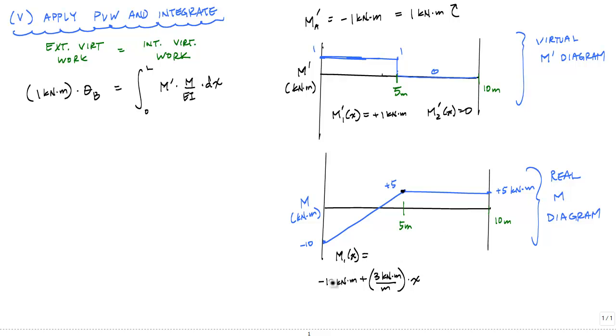If you didn't capture that, the best way to do it is to make a cut in the cantilever and draw the moment function. But if you need practice with that, you really need to review statics and mechanics. And here, M₂(x) is a constant moment equal to plus five kilonewton meters. So now I have my virtual and my real moment functions and I'm ready to apply the principle of virtual work.